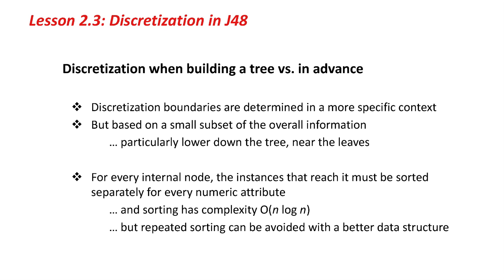Let's think about the issue of discretization when building a tree versus discretization in advance, which we looked at in the last couple of lessons. When you do discretization while building a tree, you're determining the boundaries in a more specific context — the context of that subtree. A subset of instances reaches that point, giving you a more specific dataset that may better determine where a discretization boundary should be. On the negative side, your decision is based on a small subset of the overall information. As you get further down the tree, you get smaller and smaller numbers of instances, which may not be a good basis on which to make a decision.